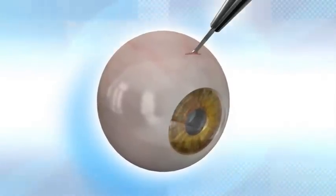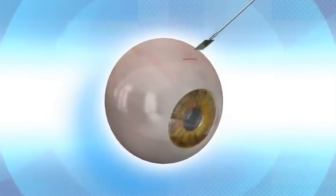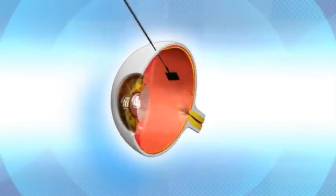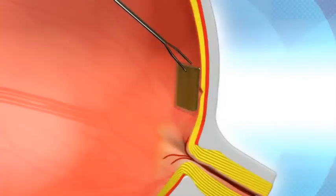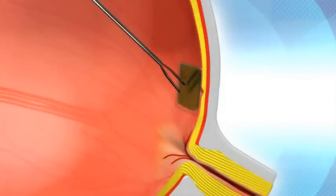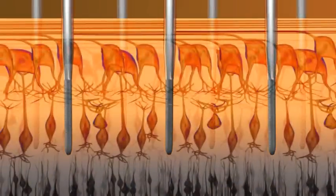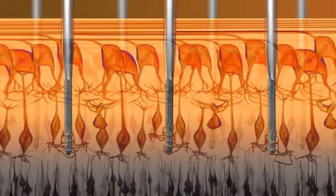The NanoRetina implant is inserted into the eye in a minimally invasive procedure involving local anesthesia and lasting less than 30 minutes. The implant is attached to the retina, and the implant's electrodes interface with the eye's bipolar neurons.